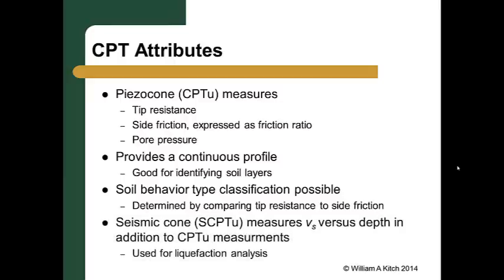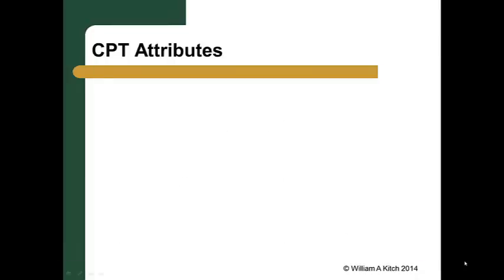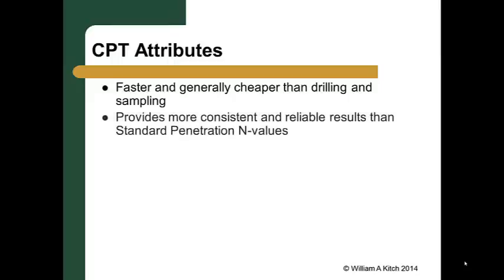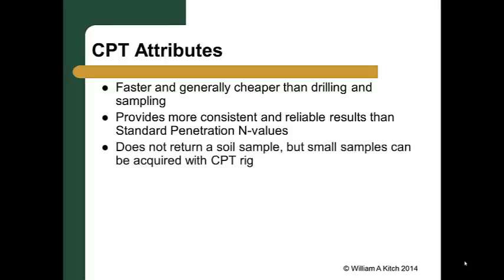The seismic cone measures shear wave velocity versus depth in addition to the measurements made by the piezo cone. Although beyond the scope of this presentation, the seismic cone is particularly useful for liquefaction analysis. CPT testing is faster and therefore generally cheaper than drilling and sampling per lineal foot of soils logged. The CPT provides more consistent and reliable results than the standard penetration test because the loading conditions in the CPT are much better controlled than those in the SPT. One of the major shortcomings of the CPT is that it does not return a sample. Push-type samplers allow CPT rigs to retrieve soil samples; however, these samplers have very limited capabilities — they are small and provide only disturbed samples. Samples cannot be taken while making CPT measurements; to take a sample, the rig must be moved and a separate push of the sampler in a new location used.